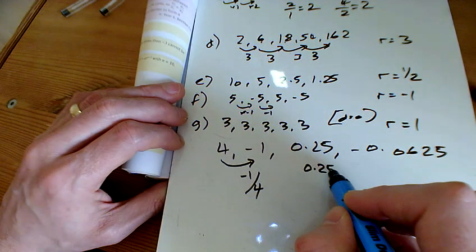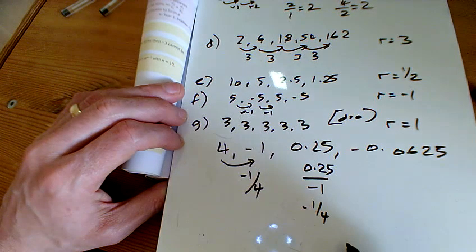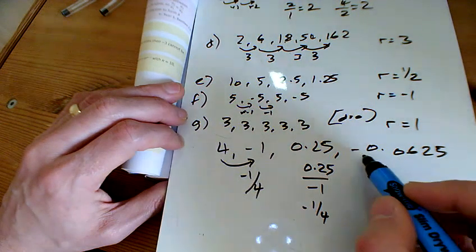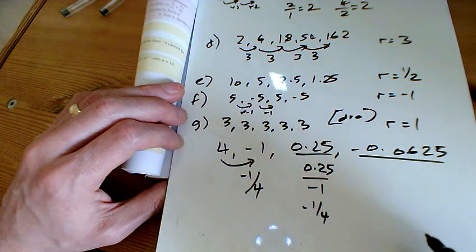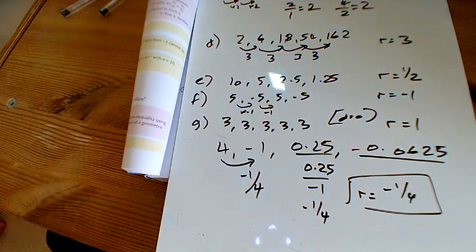If we do 0.25 divided by minus 1, yeah, we get minus a quarter again. And if we did minus 0.625 divided by that, yes, we do. So this one here, R is minus a quarter.